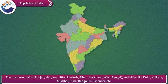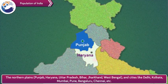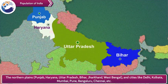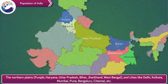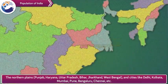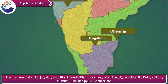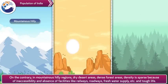For example, the northern plains include states of Punjab, Haryana, Uttar Pradesh, Bihar, Jharkhand, West Bengal and cities like Delhi, Kolkata, Mumbai, Pune, Bengaluru, Chennai etc.